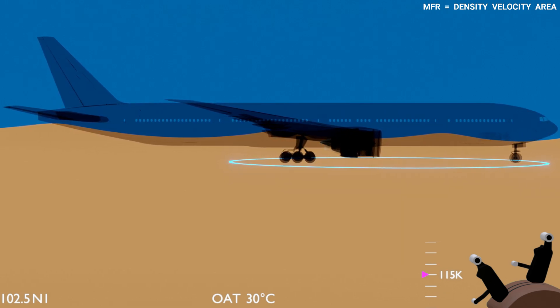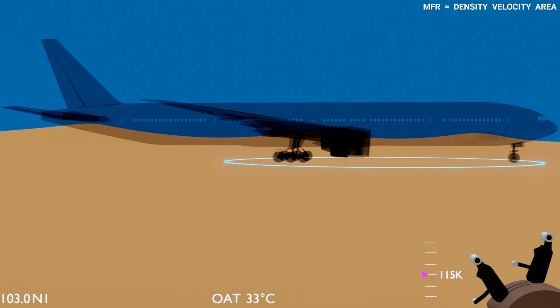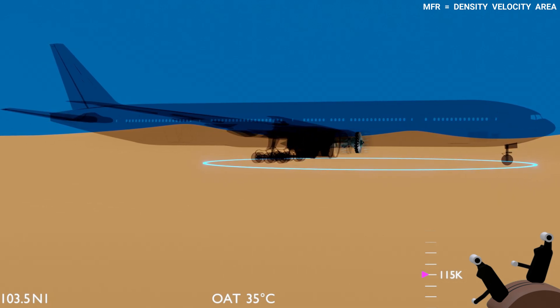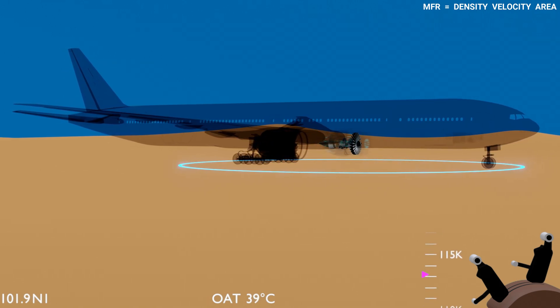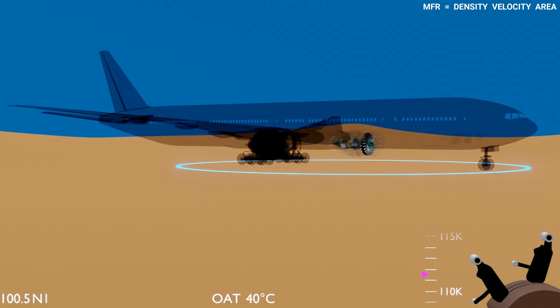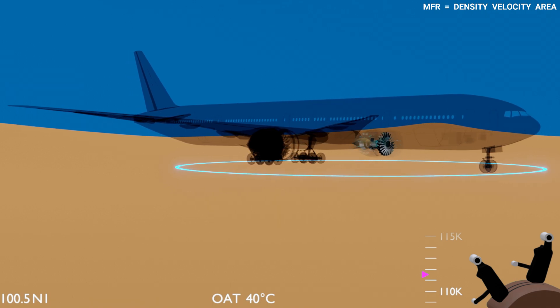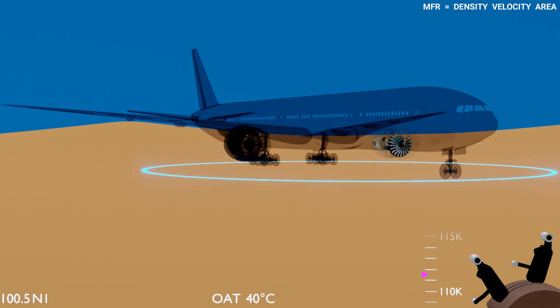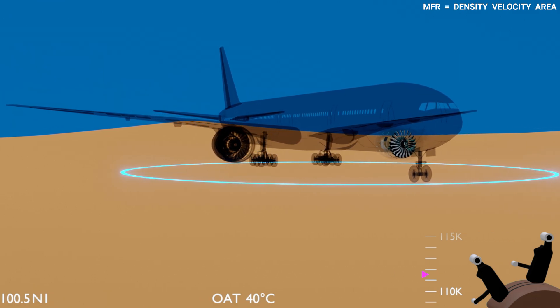If the temperature further increases, the EEC continues to increase the N1 speed, but only to a certain point. After which any further increase in the temperature, the EEC starts to reduce the N1 speed and the engine thrust output decreases below the rated thrust. This is done to protect the engine. Running at higher speed in a hot climatic condition can drastically affect the service life of the engine.